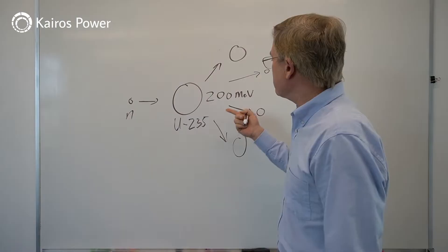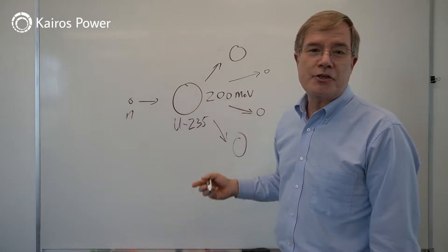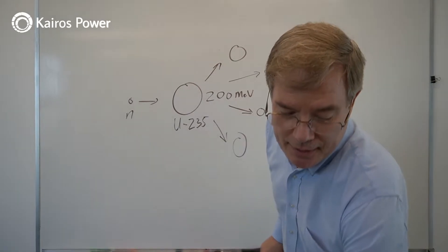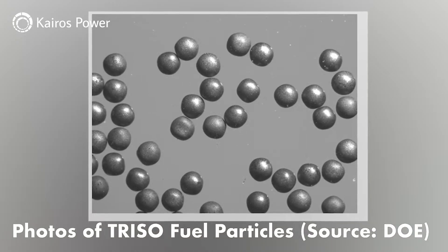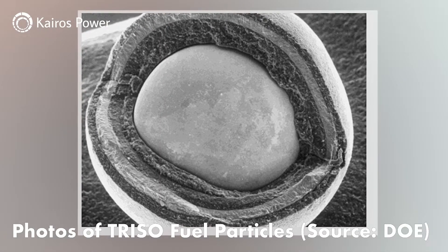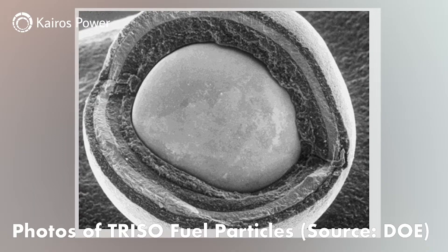These additional neutrons are used beneficially, including to sustain the chain reaction. The fuel that we use is embedded into tiny little particles that are fully ceramic and go to extremely high temperature. They're called TRISO. The Department of Energy has developed this fuel form and made it available to vendors like Kairos Power.